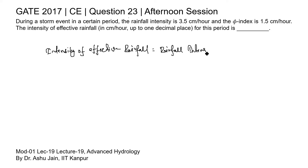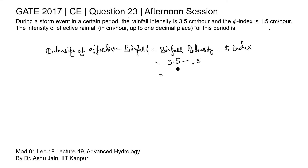The intensity of effective rainfall is calculated as rainfall intensity minus phi index. Here the rainfall intensity is 3.5 centimeter per hour and phi index is 1.5 centimeter per hour. So we get the intensity of effective rainfall as 2 centimeter per hour.